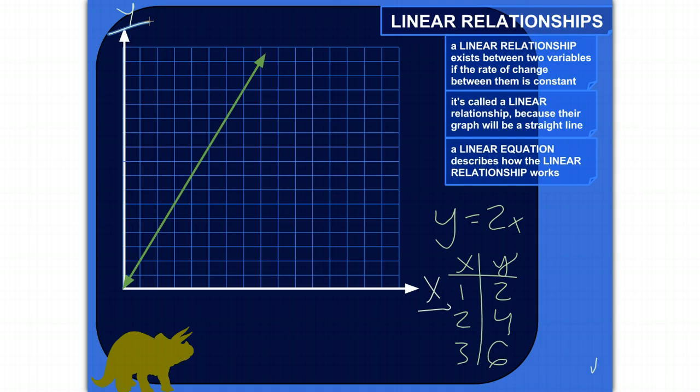And I'll kind of show you what that means. It's called a linear relationship because our graph will be a straight line, like this, and linear just means a line.